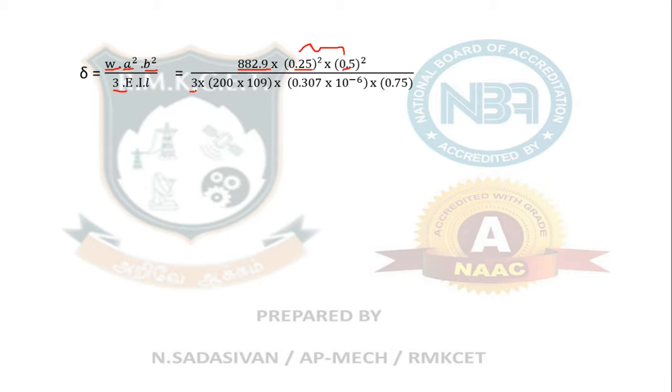3 multiplied by E, 200 × 10⁹. i is 0.307 × 10⁻⁶. L, total length, 0.75. All these values you put and calculate, you will end up with the answer of deflection. It comes around 0.1 millimeter or 0.1 × 10⁻³ meter is the answer for this calculation. You try it with the calculator. You have to try.